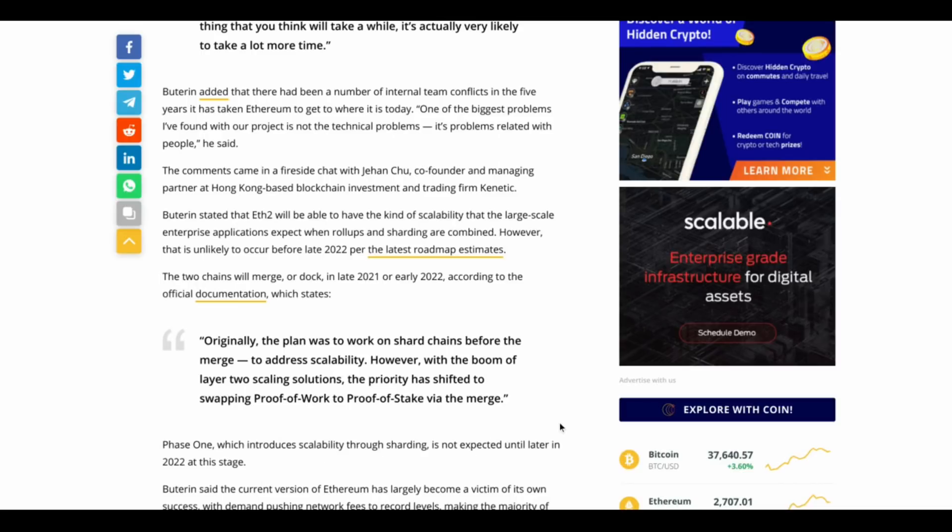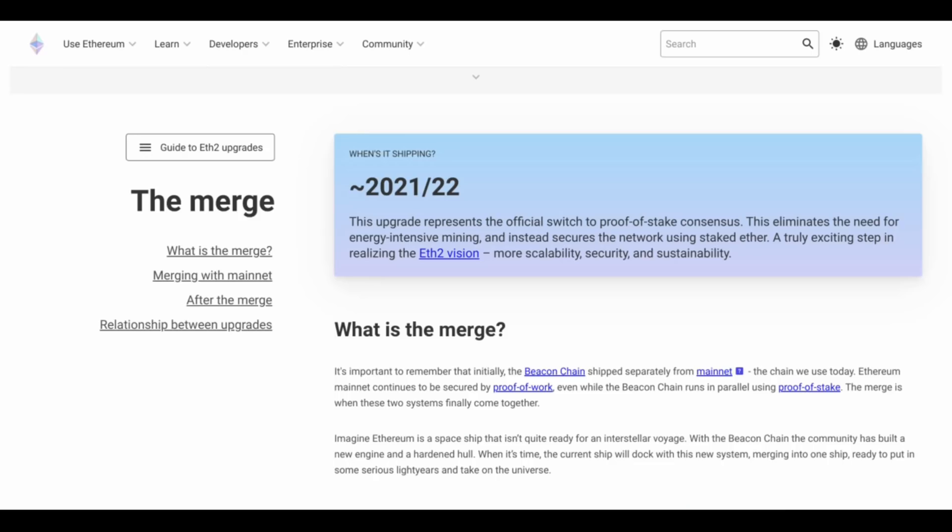is not expected until late 2022 at this stage. So let's go directly to the Ethereum documentation, here we see it, the merge, when is it shipping? Approximately, that symbol means approximately 2021, 2022. So I take that to mean definitely 2022.